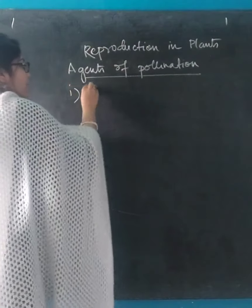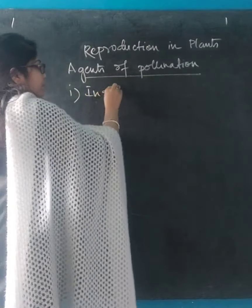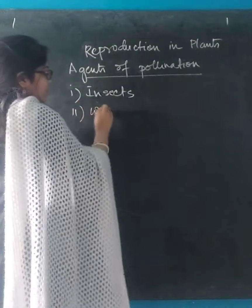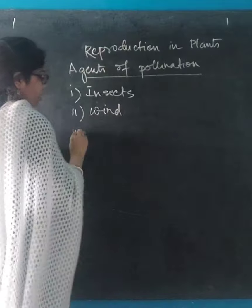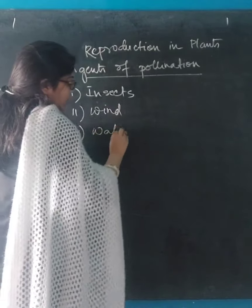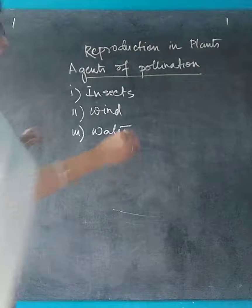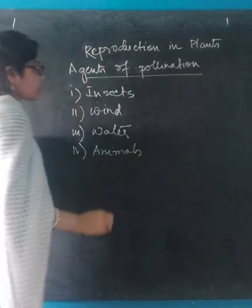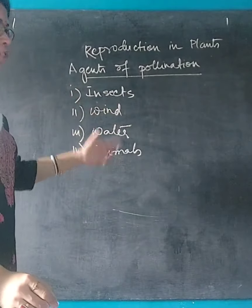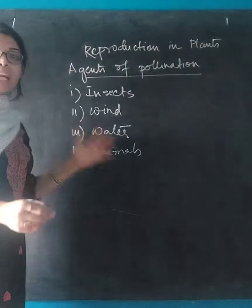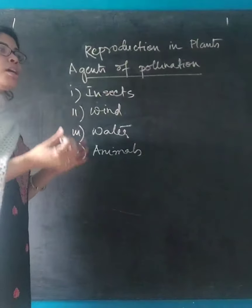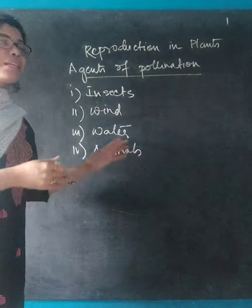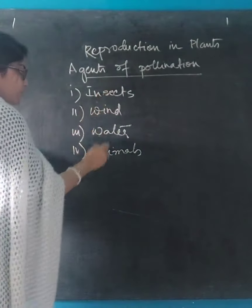The four agents of pollination are: first, insects; second, wind; third, water; and lastly, animals. These are basically types of cross pollination — cross pollination can occur via these different agents. These are the agents of pollination.